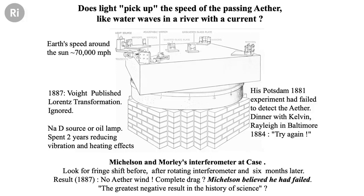He took a job at Case Western and built a much better interferometer with his friend and colleague Morley. This whole great slab was floating on liquid mercury. He took measurements when it was rotated through 90 degrees, and six months later he got the same result — nothing.